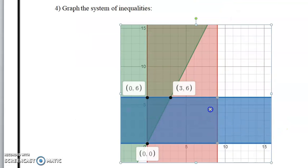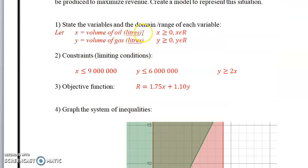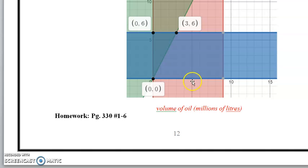So now we're going to label our graph. It's really important that we label our graph. So the x-axis, if you recall, was volume of oil. And that volume of oil is in millions of liters. The millions of liters, because this is not five liters. This is actually five million liters.